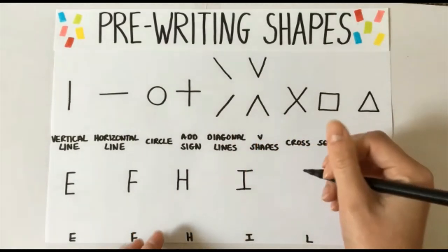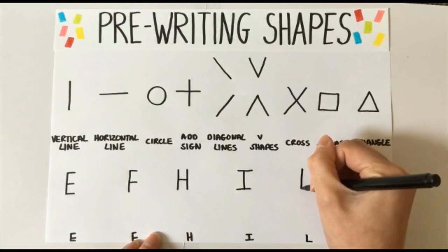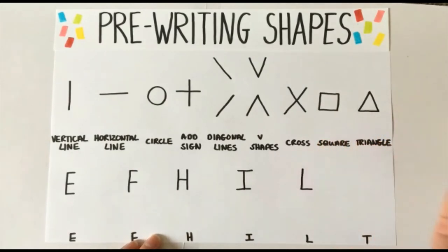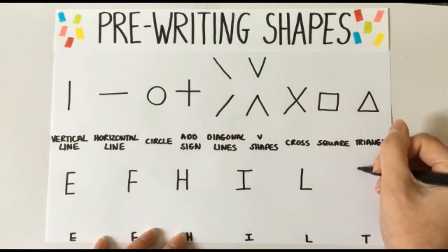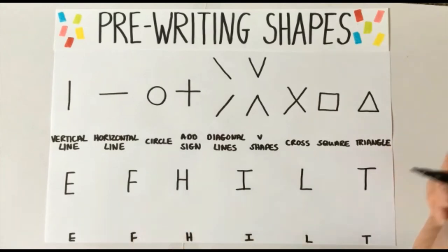L. Start at the top, go down and across. Last one. T. We need to go across and down. That's all of our pre-writing shapes. Well done and make sure you keep practising.